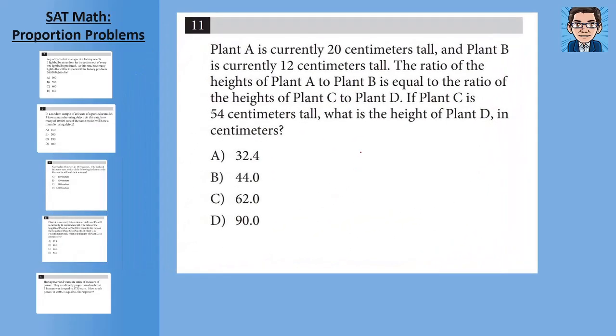Alright, the next one. Plant A is 20 centimeters. Plant B is 12 centimeters. The ratio of heights of A to B is equal to the ratio of heights of C to D. So let's just capture that as our ratio. It's telling us what the ratio is. So A/B equals C/D. And if plant C is 54, what's D? So we know A, B, and C.